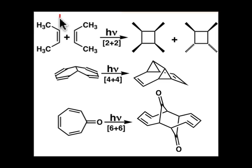The 2 plus 2 cycloaddition involves 4 pi electrons. The 4 plus 4 cycloaddition involves 8 pi electrons. And the 6 plus 6 cycloaddition involves 12 pi electrons.